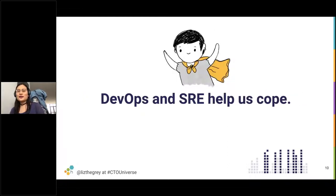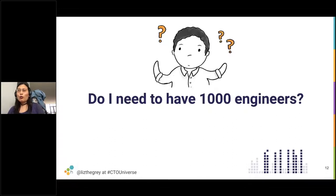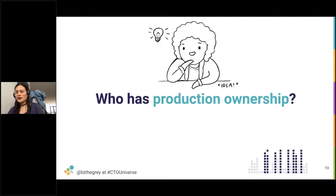We need practices such as those from DevOps and site reliability engineering to help us cope as engineering leaders and ensure our organizations maintain appropriate reliability and velocity levels. But it's really tricky to understand, as someone from outside the discipline, which parts do you implement? How do I get started with SRE inside my organization? What parts only work at Google? Do I need a thousand engineers to implement SRE, or can I do it with a team of six people?